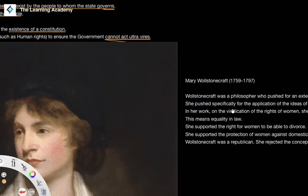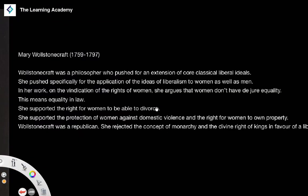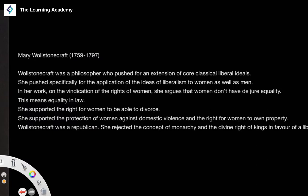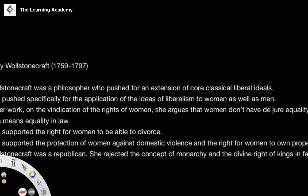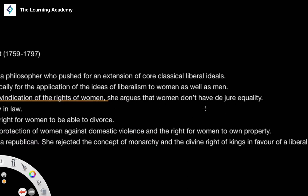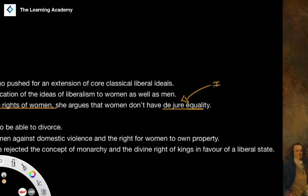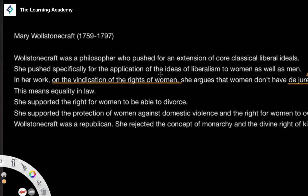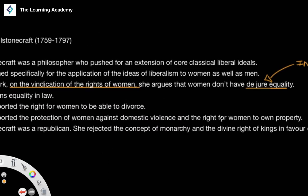Applying these classical liberal ideas, Mary Wollstonecraft believed they were very good ideas generally and wanted to extend them to argue for the vindication of women's rights, which is what her book is premised on. She argues that women don't have the same forms of equality — what we would call de jure equality, meaning equality in law. Because women lacked equality under the law, she supported early feminist ideas such as the right to divorce, the right to protection against domestic violence, and the right to own property — a revolutionary idea in the 1700s.